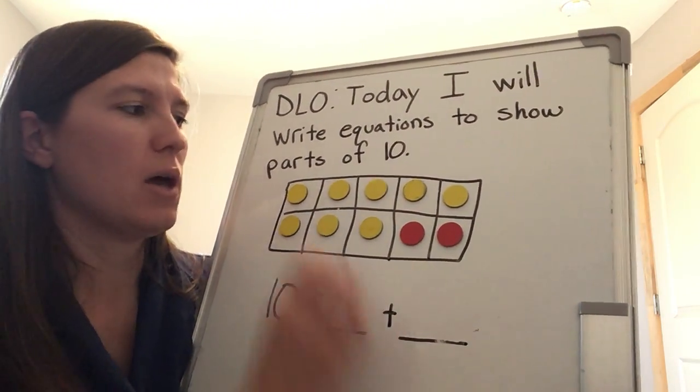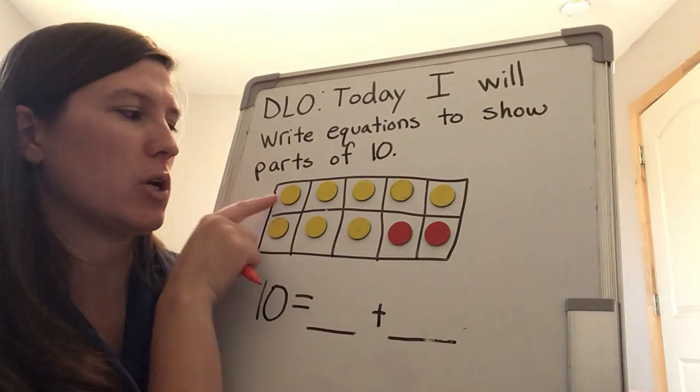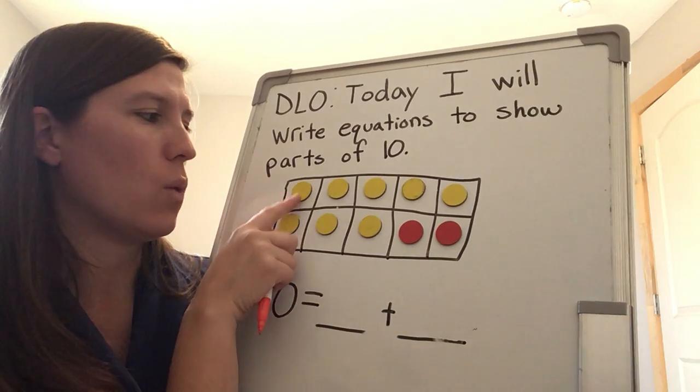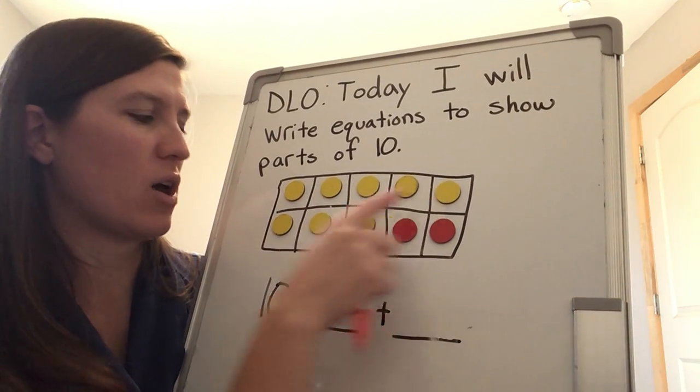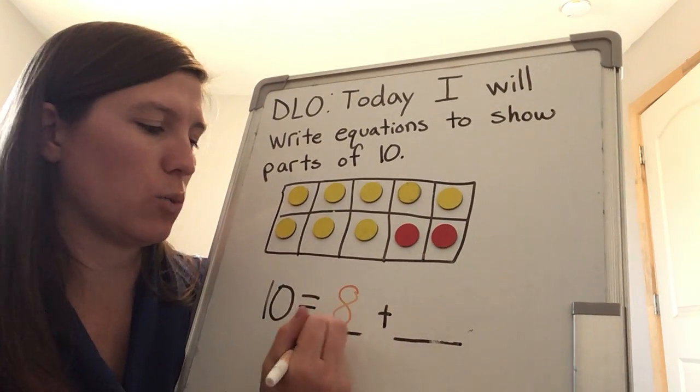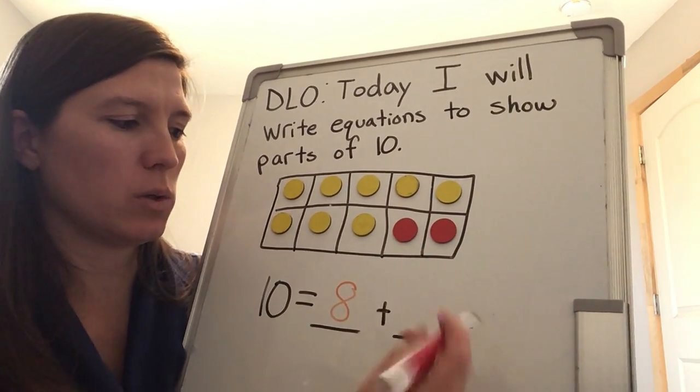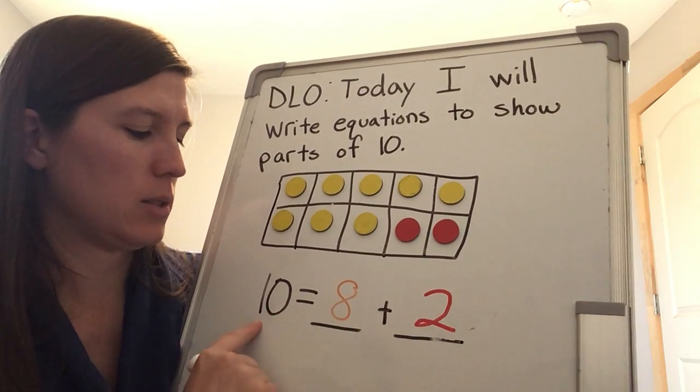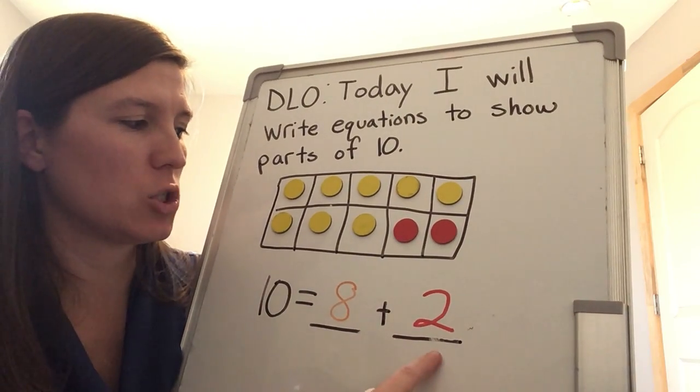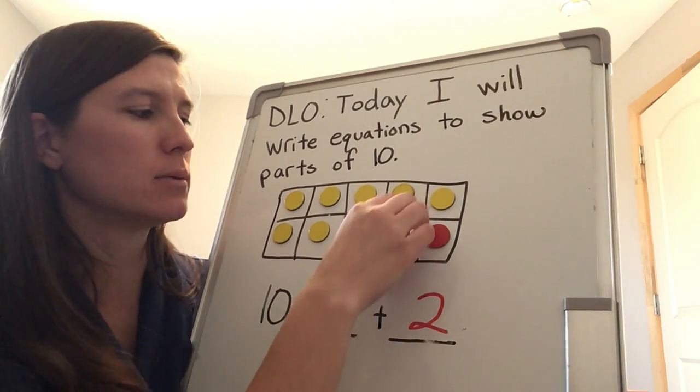Let's do another way to make 10. We're going to show parts of 10. Let's try this one. I have one part that's yellow, one part that's red. Let's count up my yellow ones first because the yellow ones are starting in that number one box. How many yellows do I have in the first part? Let's count. One, two, three, four, five, six, seven, eight. 10 equals eight, a group of eight, plus how many more? One, two. 10 can equal a group of eight and a group of two. 10 equals eight plus two. I have eight yellow and two red. Easy. Let's erase.